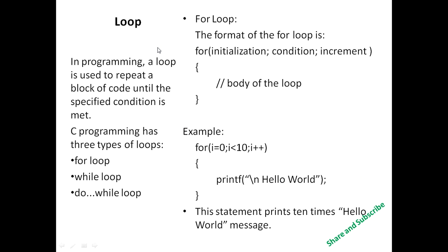First of all, I describe what is a loop in programming. A loop is used to repeat a block of code until the specified condition is met. In C programming there are three types of loops: for loop, while loop, and do-while loop. In this video I describe only the for loop.